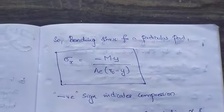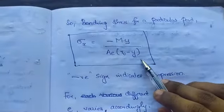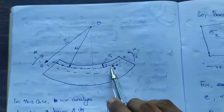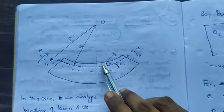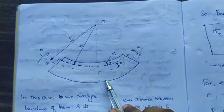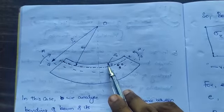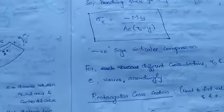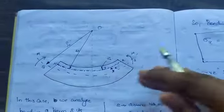For these types of problems the bending stress is given by a specific equation — you just need to remember this equation; derivations are not required. Since the neutral axis is above the centroidal axis, the stress undergoes compression up to that point and is tensile beyond it. The formula becomes: σ = M·y / (A·e·r_naught − y). This can apply to circular, rectangular, trapezoidal, and other cross-sections.